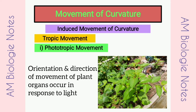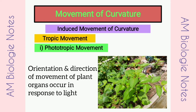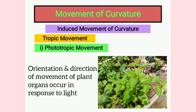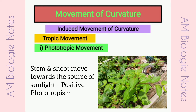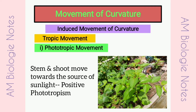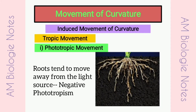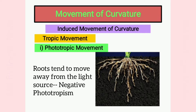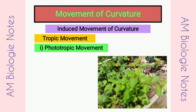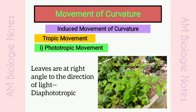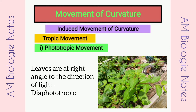Phototropic movement: Here, the orientation and direction of movement of plant organs occur in response to light. The stem and shoot move towards the source of light, showing positive phototropism. The roots tend to move away from the light source, indicating negative phototropism. The leaves are usually placed at right angles to the direction of light, showing diaphototropic movement.